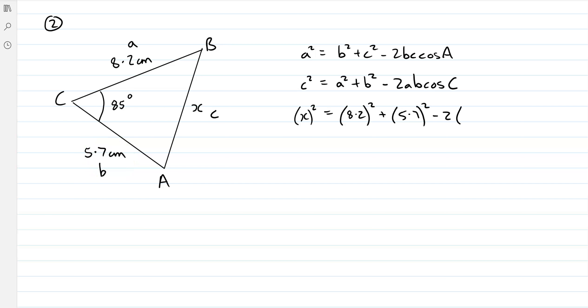Minus 2, a still 8.2, b still 5.7, then cos of the angle c. Angle c, here it is, 85.